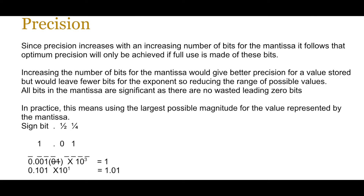So what do you need to remember as a programmer? You decide how many bits to allocate for mantissa and exponent, and it's a balancing act depending on the needs of your program. In practice, all bits in the mantissa are significant as there are no wasted leading zero bits. This basically means using the largest possible magnitude for the value you want to represent, hence moving the binary point just after the sign bit.